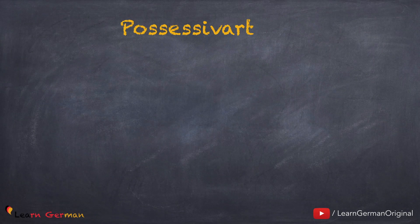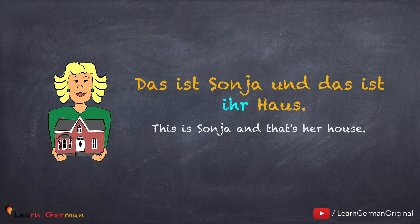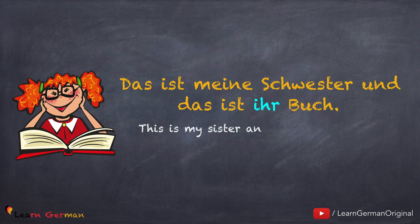The next use of ihr is as a possessive article. This one is used for the singular pronoun sie in the third person. For example: 'Das ist Sonja und das ist ihr Haus.' Sonja is singular, feminine, and in third person, hence the correct possessive article is ihr klein. Similarly: 'Das ist meine Schwester und das ist ihr Buch.' Das Buch belongs to my sister — singular, feminine, third person — so the correct possessive article is ihr klein.